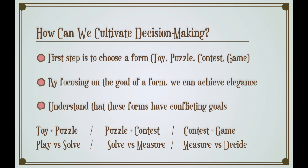So how can we cultivate decision-making? This is a very low level talk — a starting point. The first step is to choose a form, and by focusing on the essential property of a form, we can achieve elegance. It's important to understand that these forms, while they have similar components, can actually have conflicting goals. A contest is about measuring and a game is about deciding players' decisions. In a professional arm wrestling tournament, it's important that players are not able to decide anything — you're trying to get an accurate reading of arm strength. Decision-making in a contest can often be considered cheating, or cheating in spirit. You're not supposed to exercise creativity in a contest; you're supposed to measure your ability.